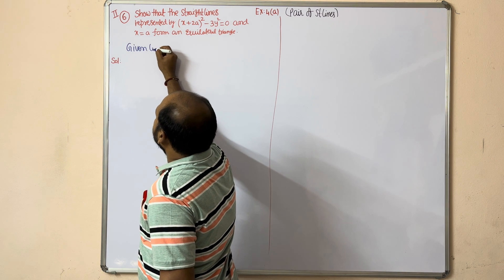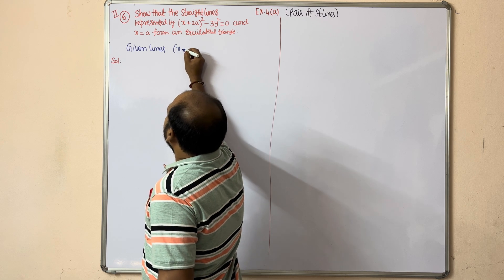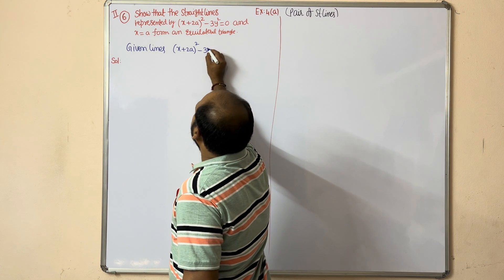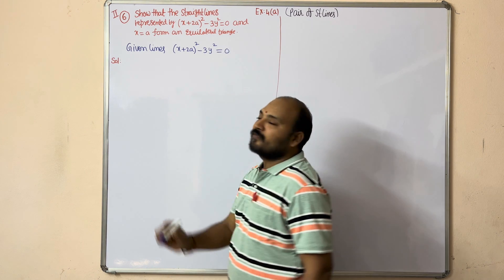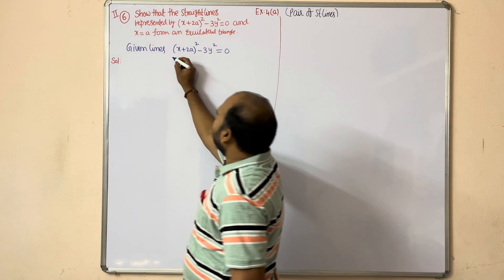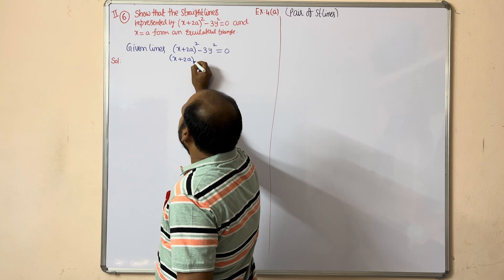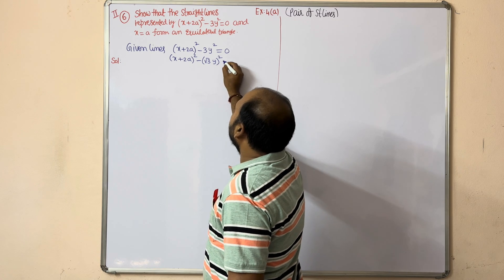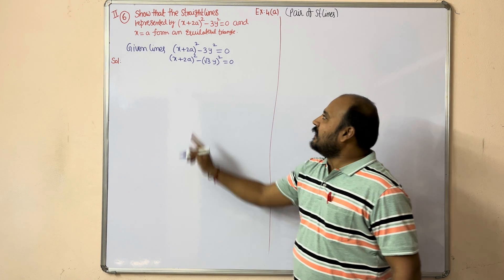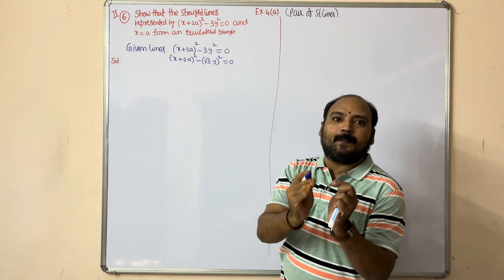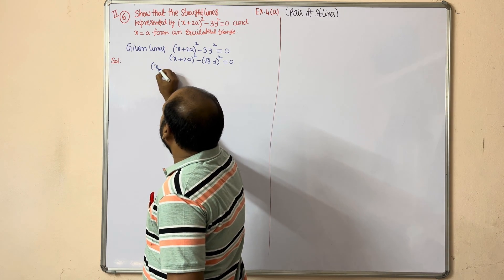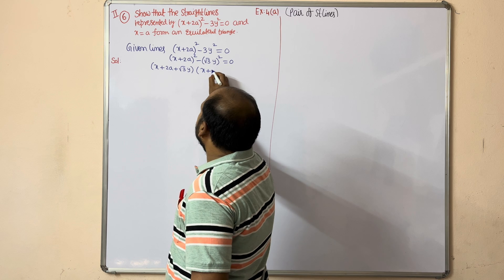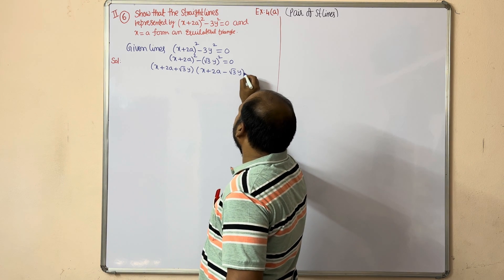The first set of lines is (x + 2a)² - 3y² = 0. We can write (x + 2a)² - 3y² as (x + 2a)² - (√3·y)². This is in the form a² - b² = (a + b)(a - b), so it becomes (x + 2a + √3·y)(x + 2a - √3·y) = 0.